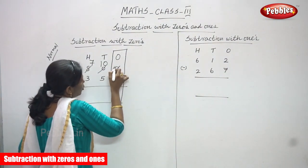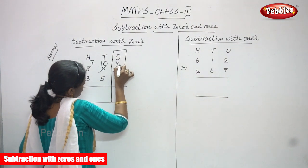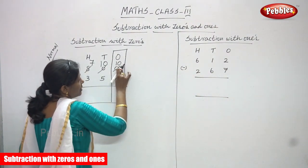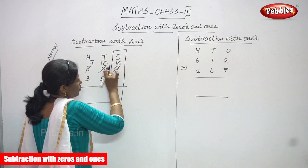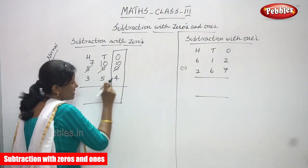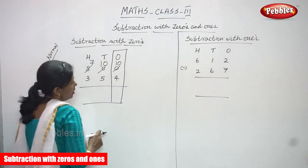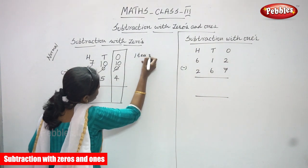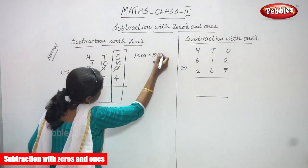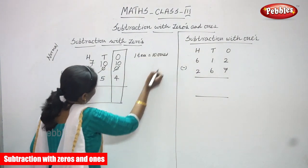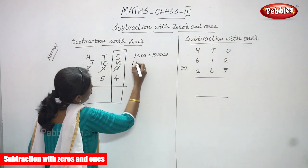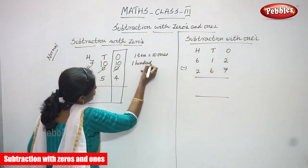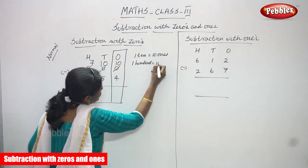So this zero becomes ten — that means one ten. That means I am just borrowing only one ten, and this is called ten ones. One ten means ten ones, and one hundred means ten tens.